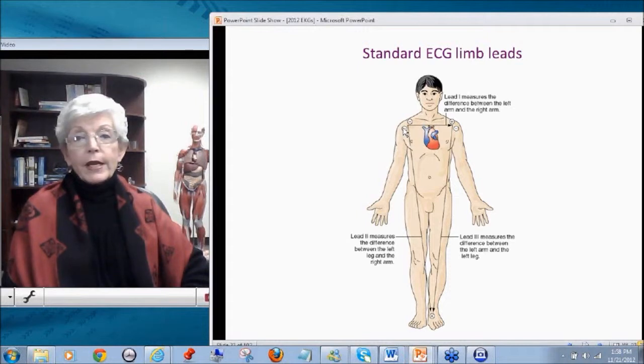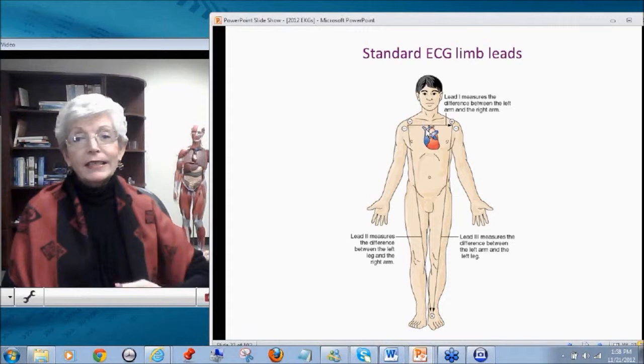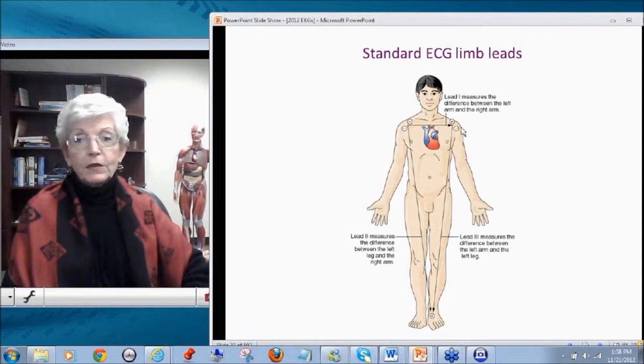Lead 1 reads from the right arm being negative to the left arm with the positive electrode. Now although the flow of electricity is in fact going in this direction, imagine this arrow that you're seeing upside down. It's going from the right atrium towards the right ventricle, but it's still in that range. It's not going up this direction up to my right arm. So in a lead 1, I do get a positive deflection.